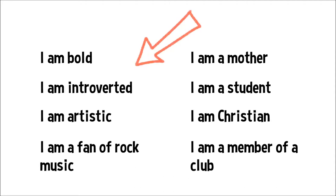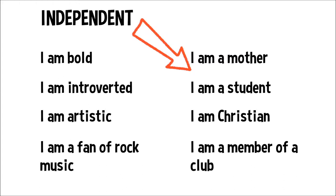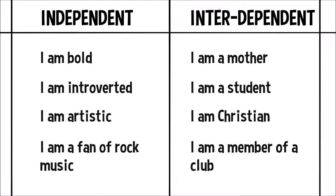What word did you use to complete the sentence? Other than your name, of course. If you listed more terms like these, you're more likely to have what is called an independent self-construal. If you listed more terms like these, you're more likely to have what is called an interdependent self-construal.